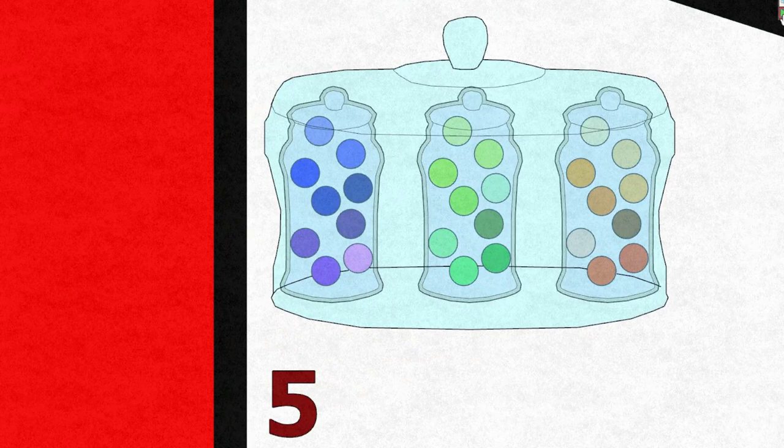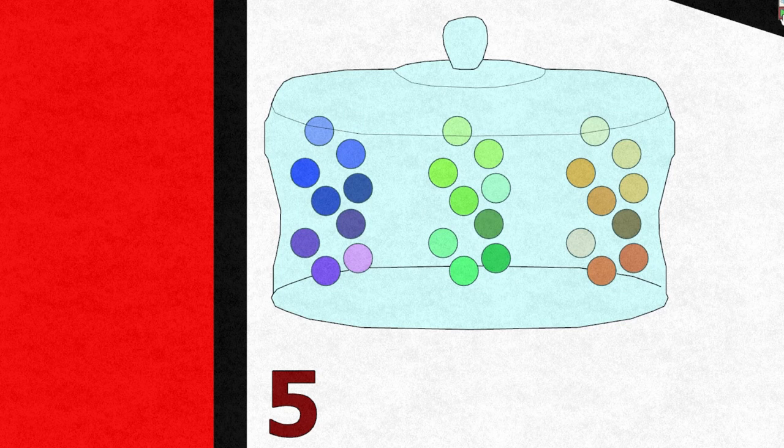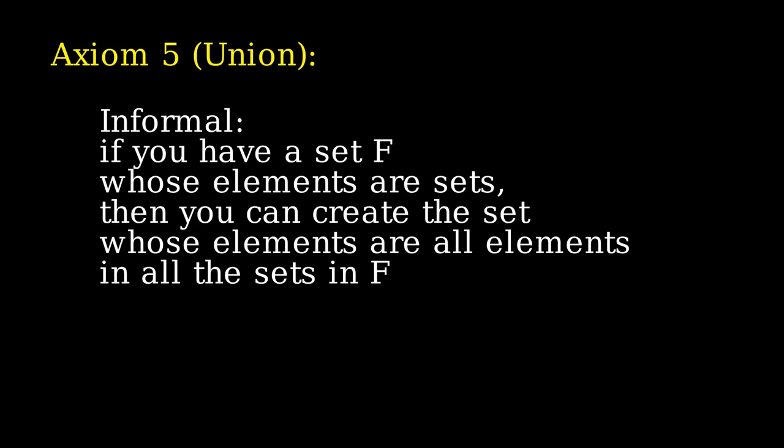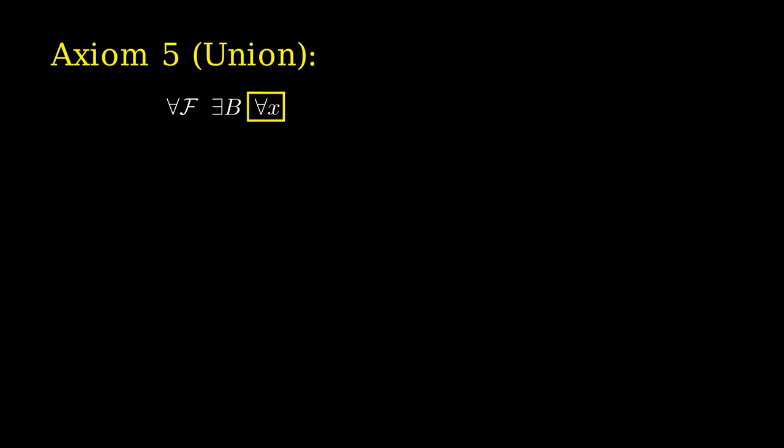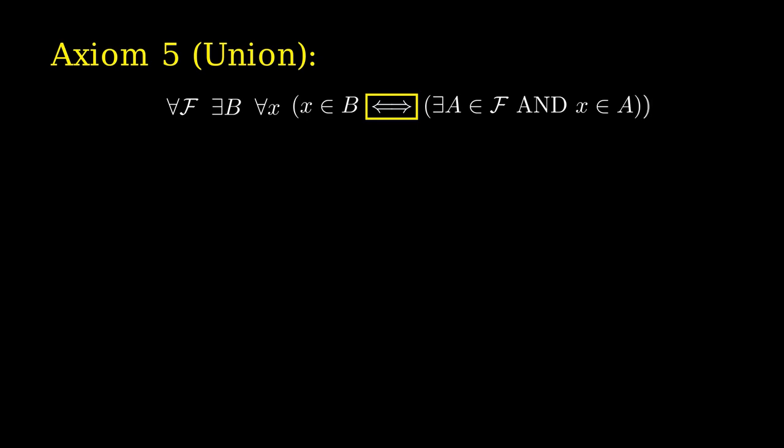Here's axiom 5. If you have a jar full of jars of candies, you can get rid of the little jars and just let the candies mix inside the big jar. More formally: if you have a set F whose elements are sets, you can create the set whose elements are all the elements in all the sets in F. Formally: for every set F there exists B such that for every X, X belongs to B if and only if there exists A in F such that X belongs to A.